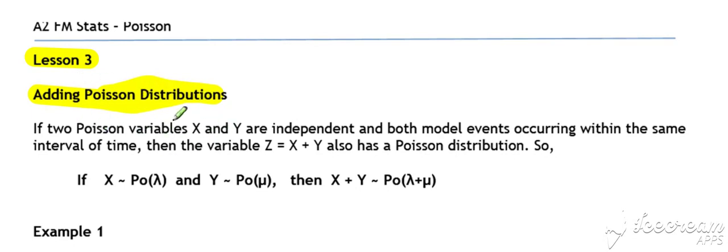So if we've got two Poisson variables, X and Y, and they're independent, and they both model events within the same interval of time, then if we add X and Y together to get Z, then Z will also have a Poisson distribution such that Z or X plus Y will have a Poisson distribution with a mean that is the mean of X lambda plus the mean of Y mu added together. So a simple idea when you're adding Poisson distributions, we can just add together the averages, average occurrences for that given time period.